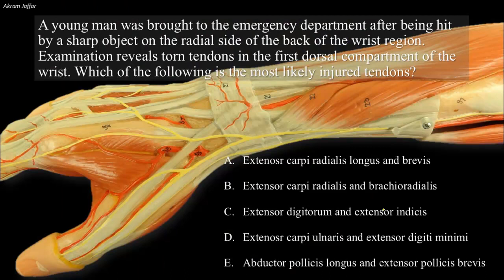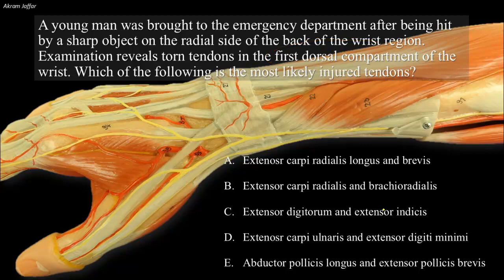A young man was brought to the emergency department after being hit by a sharp object on the radial side of the back of the wrist region. Examination reveals torn tendons in the first dorsal compartment of the wrist. Which of the following is the most likely injured tendons?